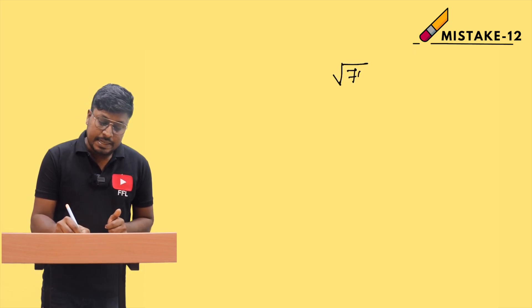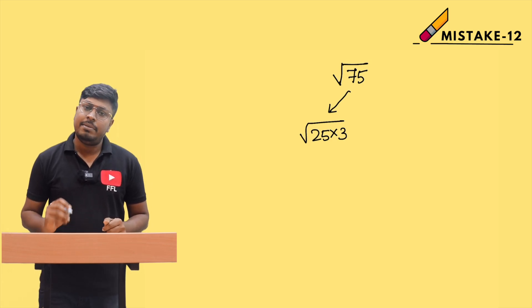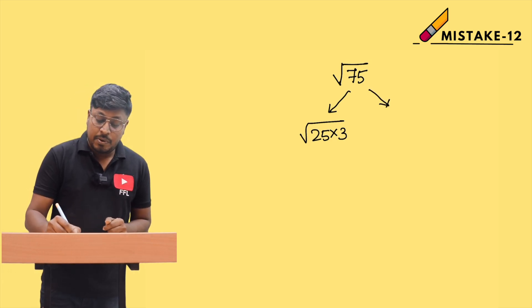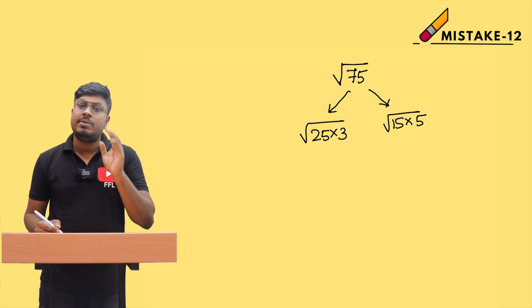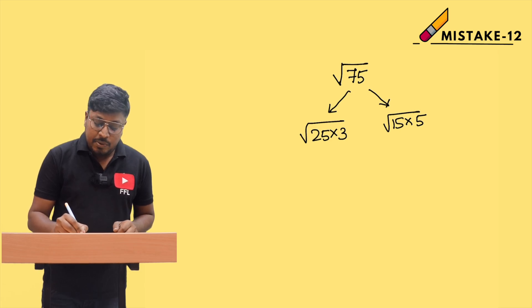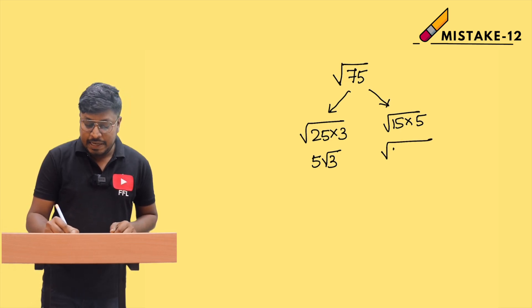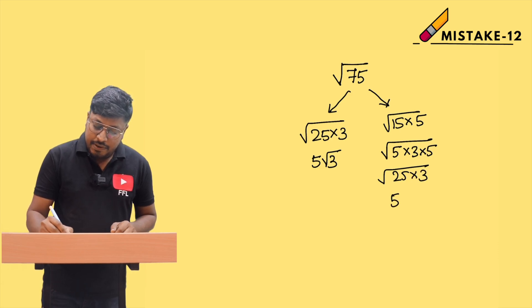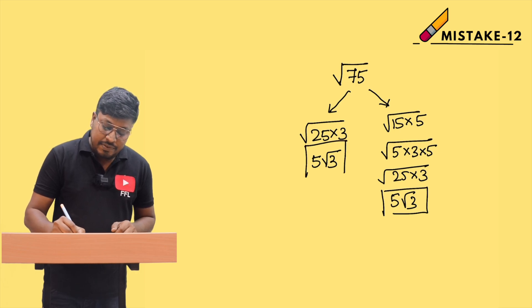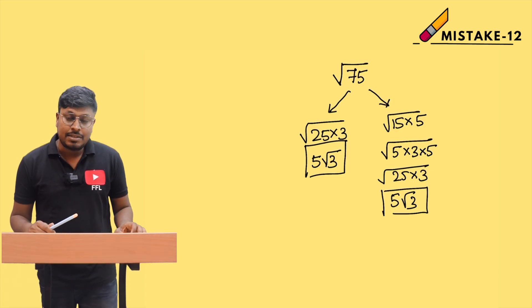Let's take another example: square root of 75. Some students write √75 as √(25×3), while others write it as √(15×5). Both are valid — 25×3 = 75 and 15×5 = 75. With 25×3: √25 = 5, giving 5√3. With 15×5: expand 15 as 5×3, so you get √(5×3×5) = √(25×3) = 5√3. Both methods give the same answer.